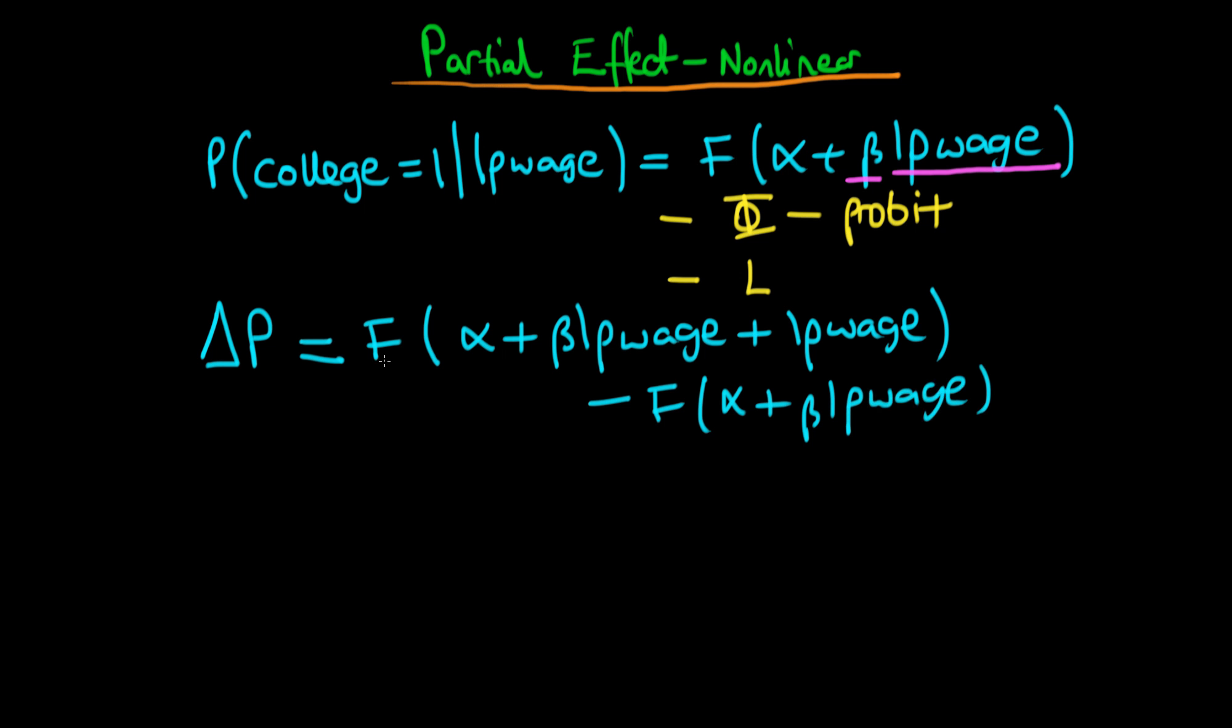And note that due to the non-linear property of F, this difference in probability is not, in general, going to be equal to beta. And that is why we can't necessarily just observe beta and alpha and interpret them as we did in the linear probability model. They have a more complex meaning in the case of a non-linear model.